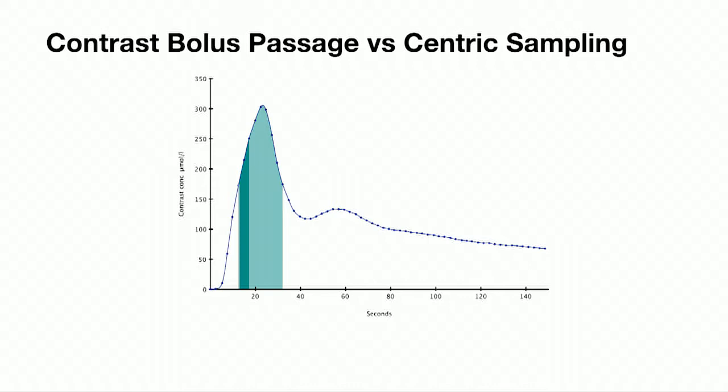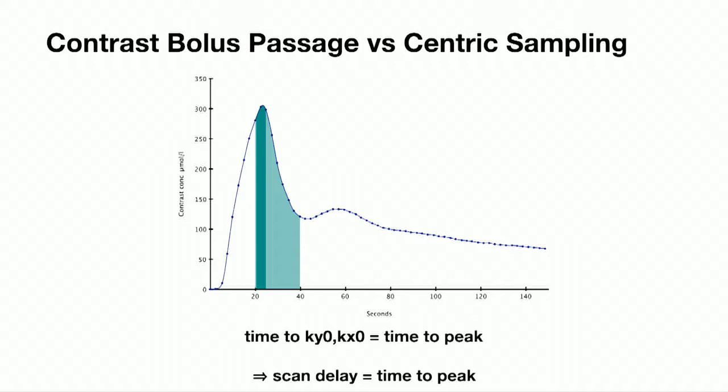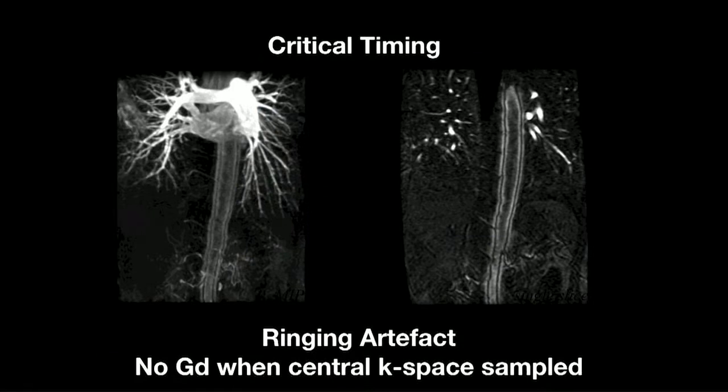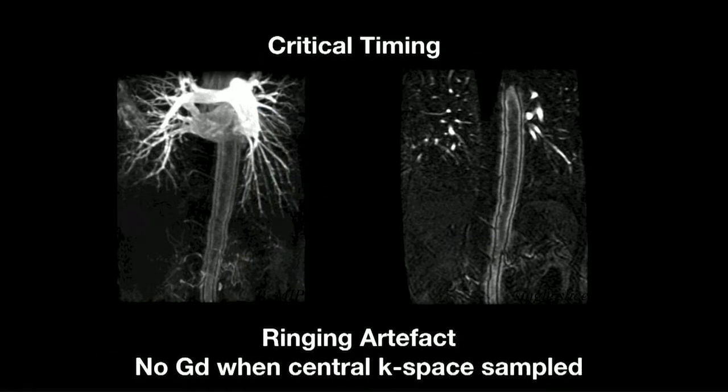With centric encoding, the central lines of K-space are defined earlier, which means we can move our acquisition time so we start acquiring K-space data when the contrast is at its peak. This does bring a real problem: if you miss-time that centre of K-space slightly, you get ringing artefacts in the aorta because the central K-space is not acquired when the contrast is in the aorta.